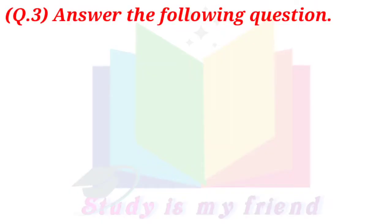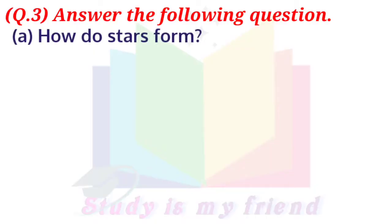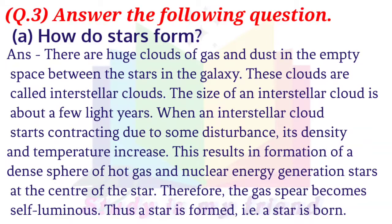Question 3. Answer the following questions. A. How do stars form? Answer: There are huge clouds of gas and dust in the empty space between the stars in the galaxy. These clouds are called interstellar clouds. The size of an interstellar cloud is about a few light years. When an interstellar cloud starts contracting due to some disturbance, its density and temperature increase. This results in formation of a dense sphere of hot gas and nuclear energy generation at the center of the stars. Therefore, the gas sphere becomes self-luminous. Thus, a star is formed.